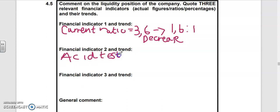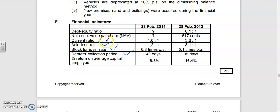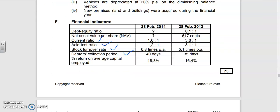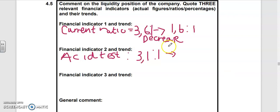Financial indicator two: acid test ratio. It was 3.1 is to 1 to 1.2 is to 1, and it dropped to 1.2 is to 1.